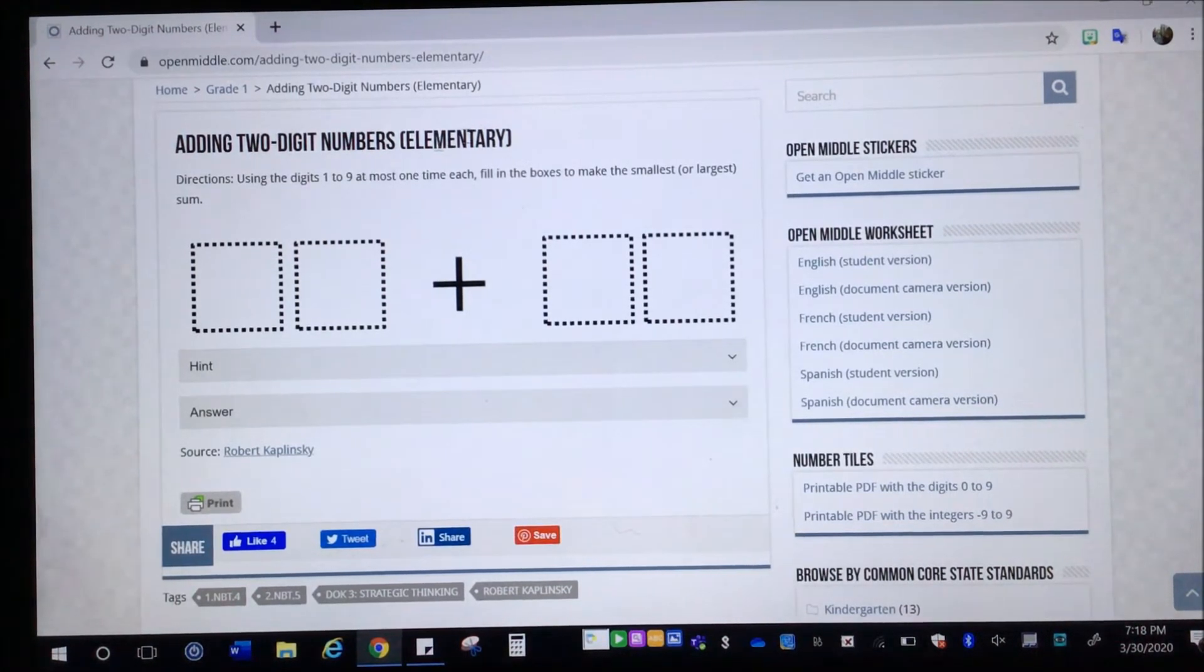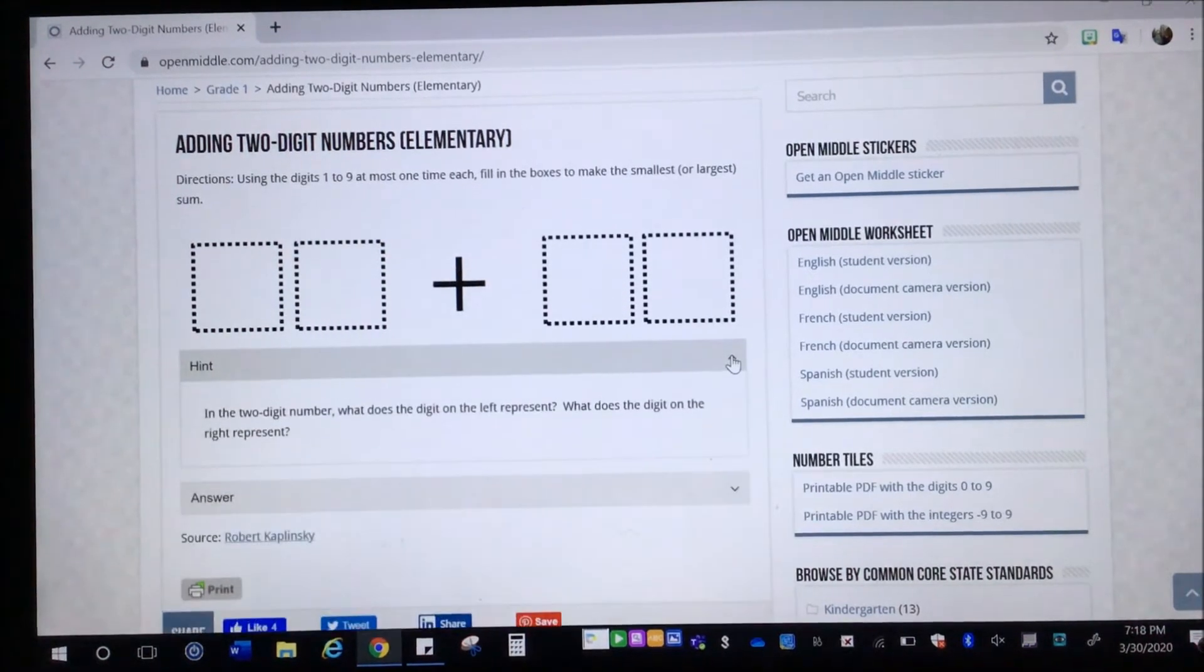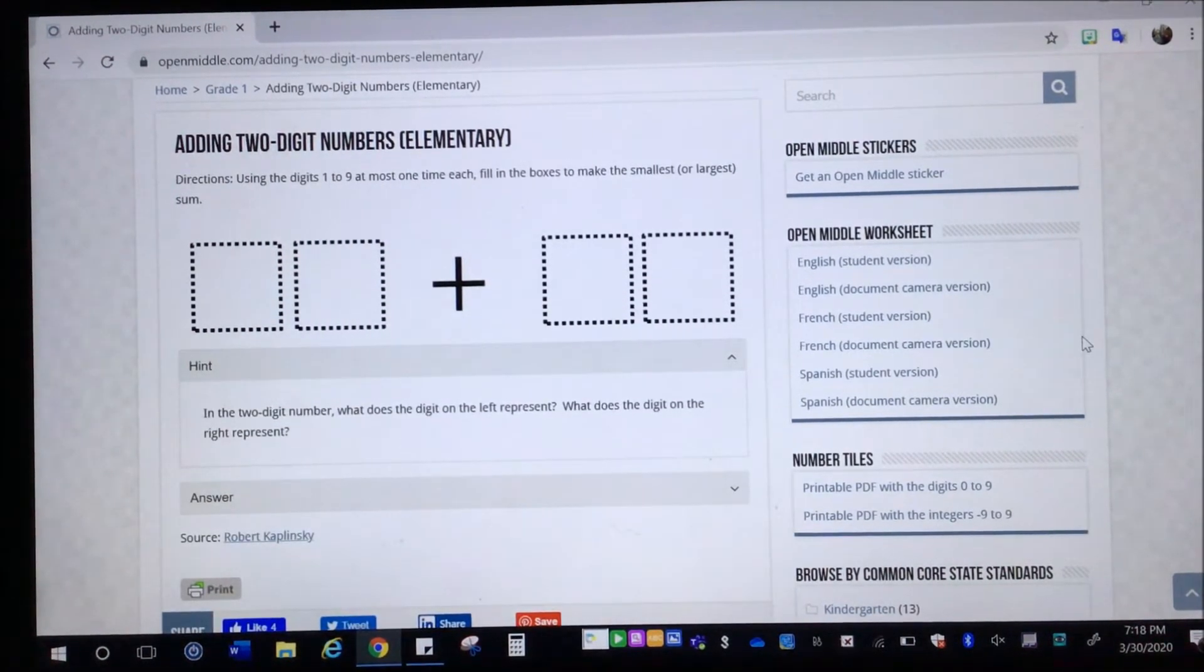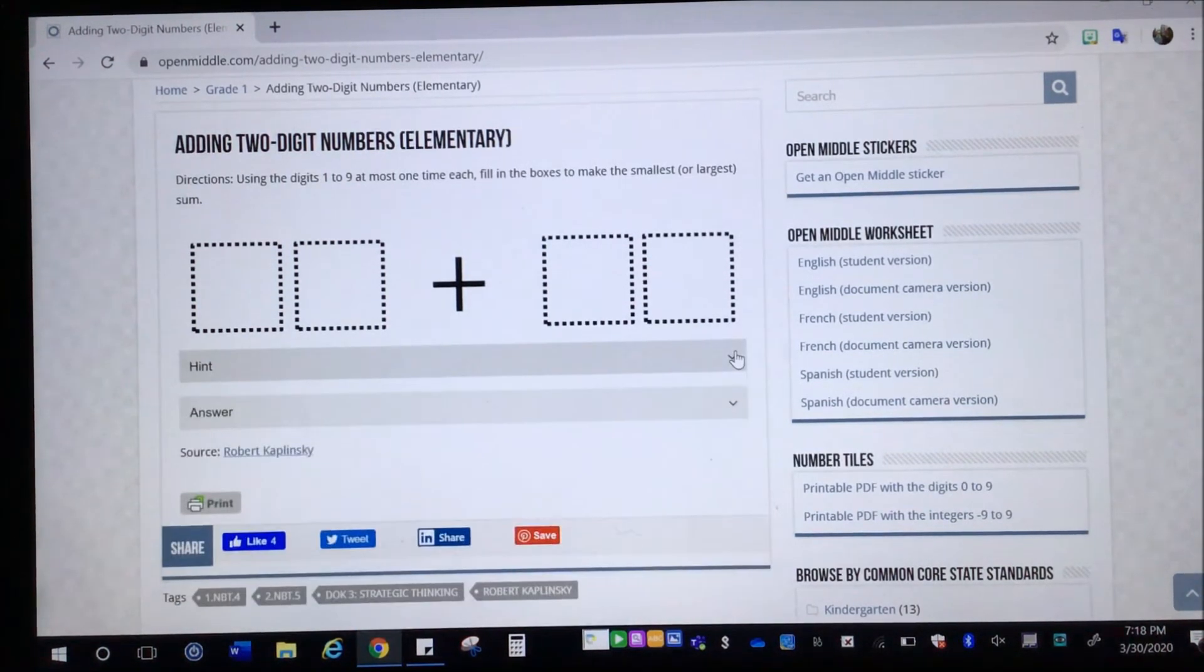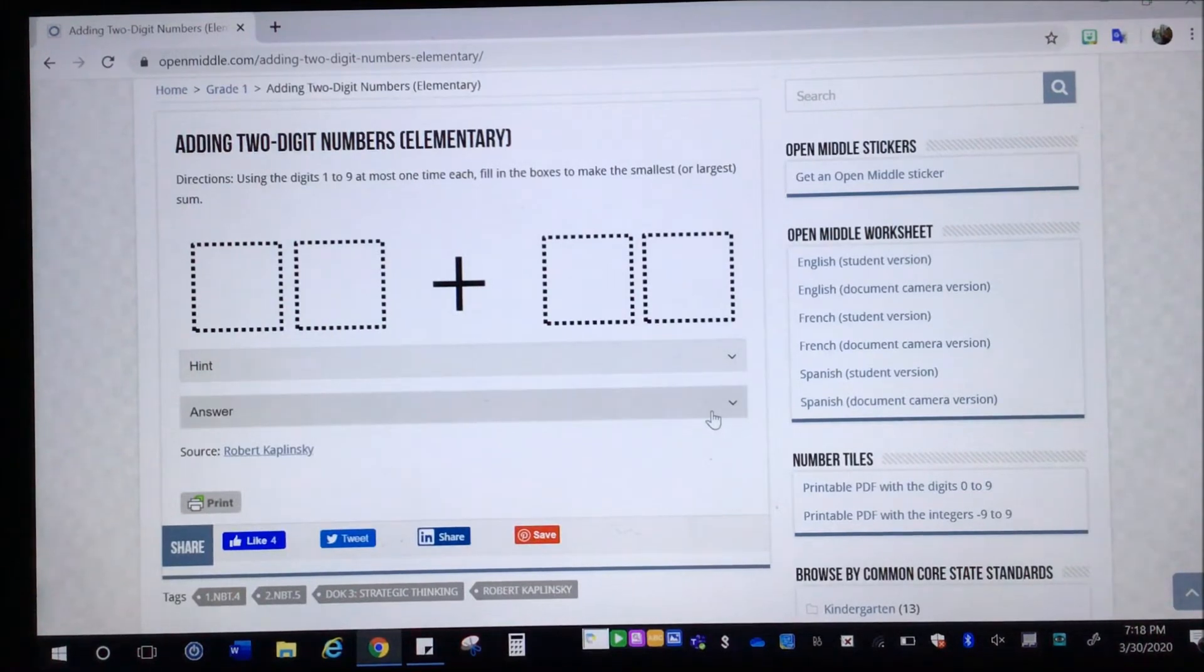Let's see. There should be a hint for that one. Again, almost all of them do have a hint. So if you're stuck, you can check out the hint. In the two digit number, what does the digit on the left represent? What does the digit on the right represent? So that's a hint for you to think, how can I make these really the smallest or the largest sum possible? And then I'm not going to break it down now in case you would like to solve this, but there is also an answer where you can check your work.